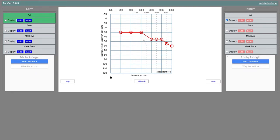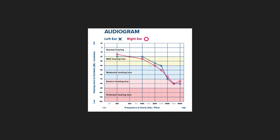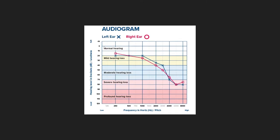Now let's look at the different severity levels of hearing loss. Anything between 0 and 20 decibels is considered normal hearing. From 20 to 40 decibels is mild hearing loss — though this is a generalization, since you might have normal hearing in the low tones but severe loss in the higher frequencies. 40 to 70 decibels is moderate, 70 to 90 is severe, and anything beyond 90 decibels is considered profound hearing loss.